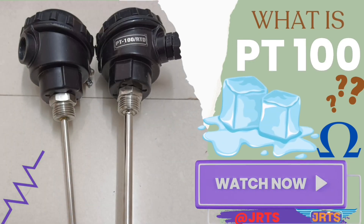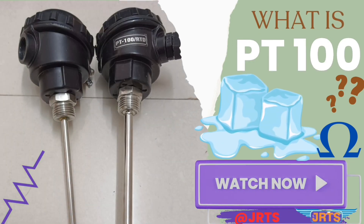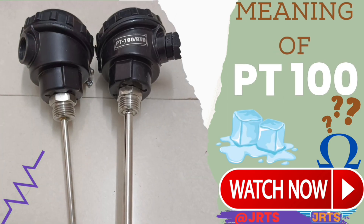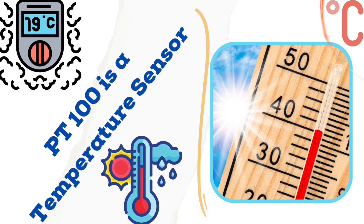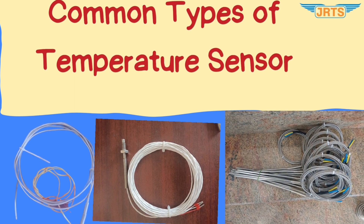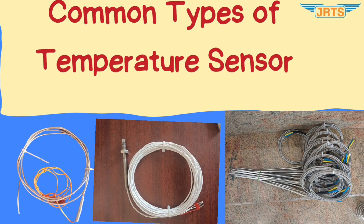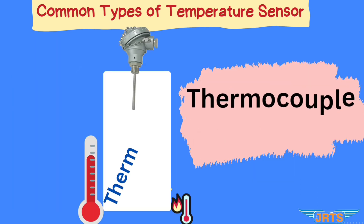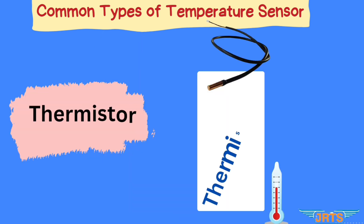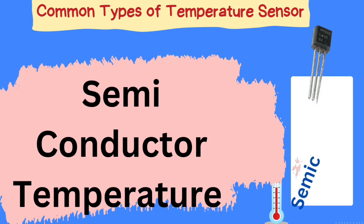Hi all, in this video we are going to see what is PT100 and what is the meaning of PT100. PT100 is a temperature sensor. Temperature sensors are commonly classified into 4 types: one is RTD, the second one is thermocouple, the third one is thermistor, and the last one is semiconductor.